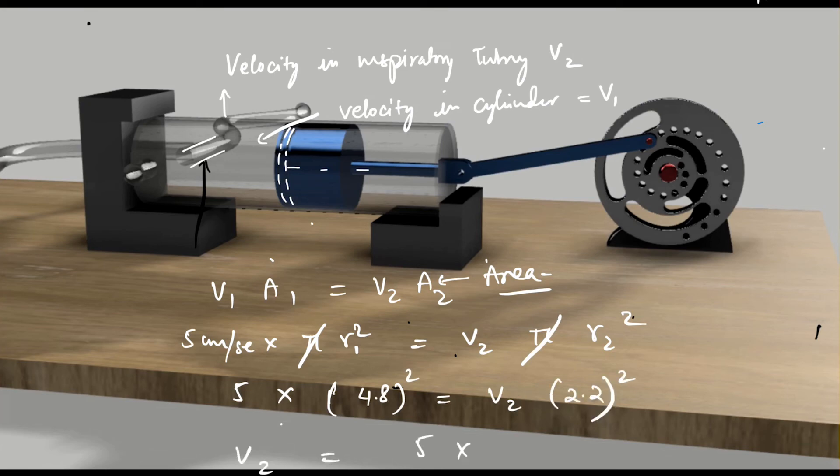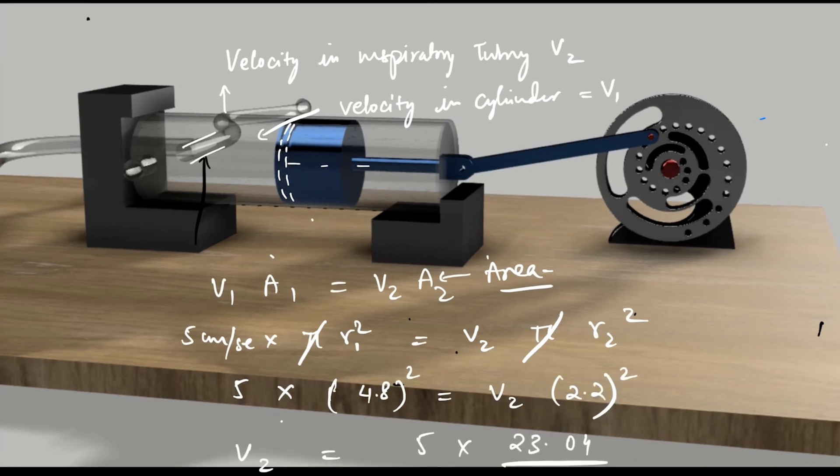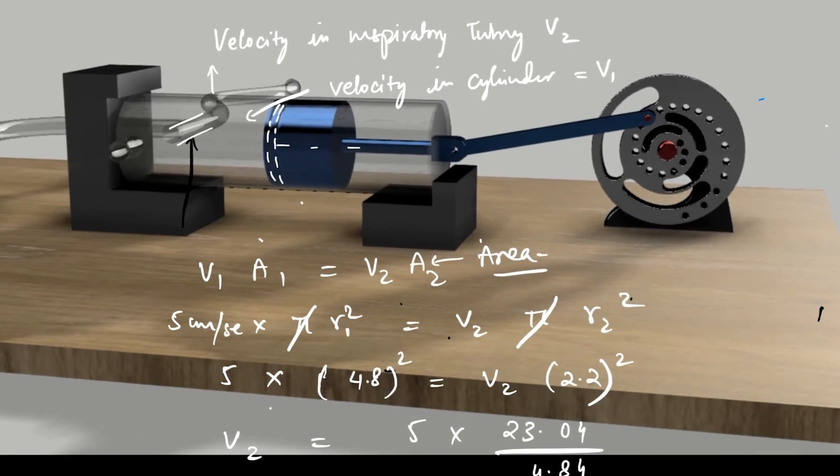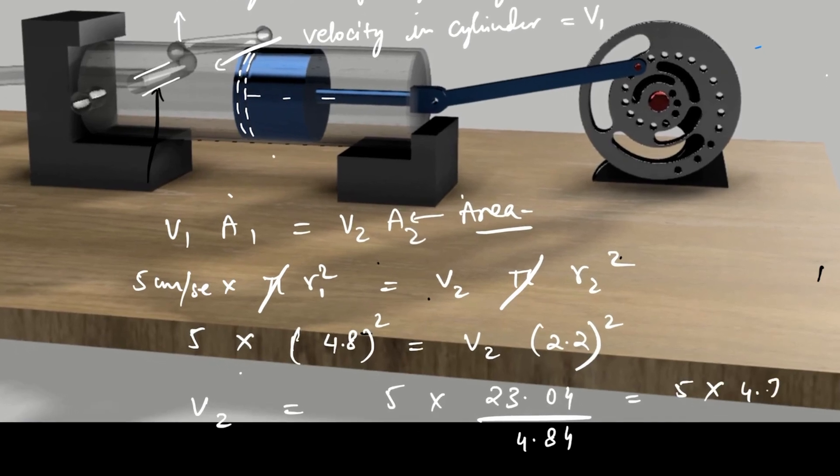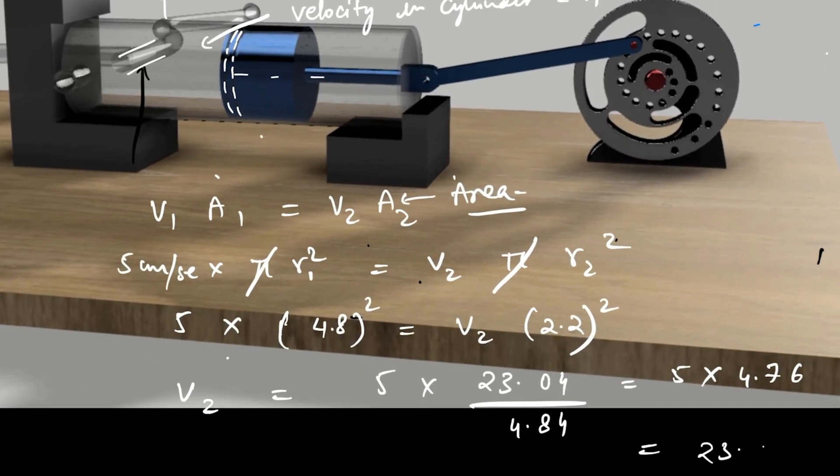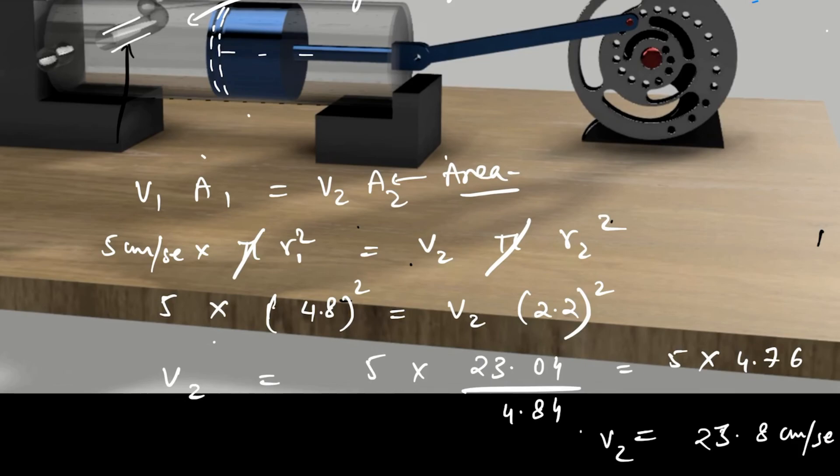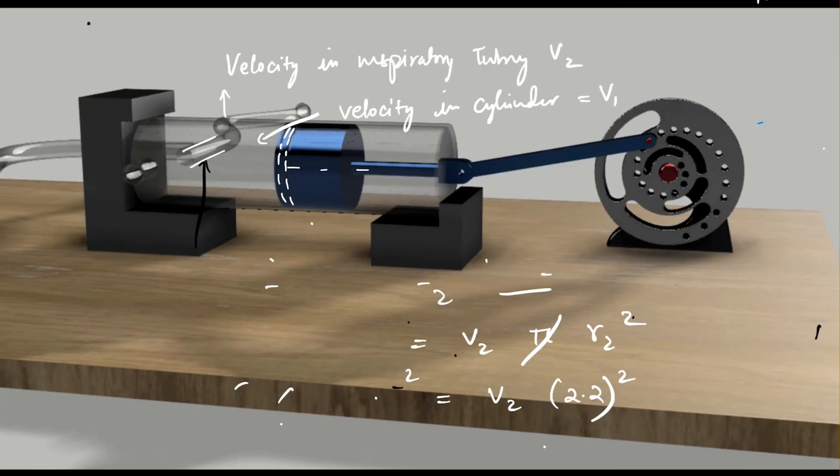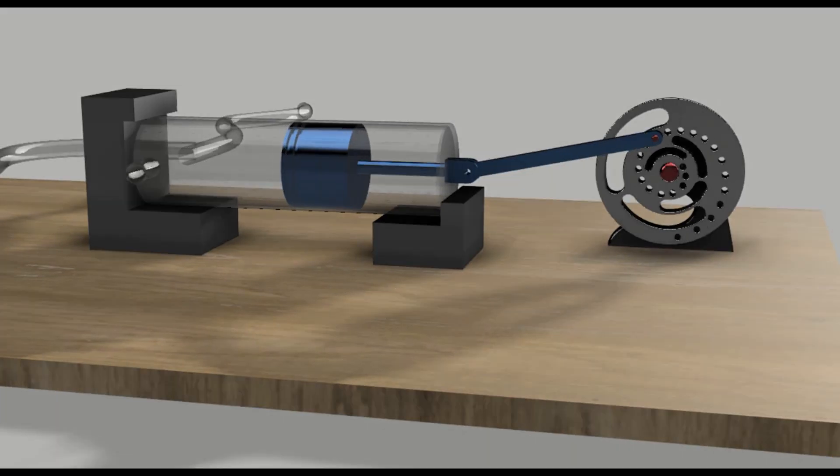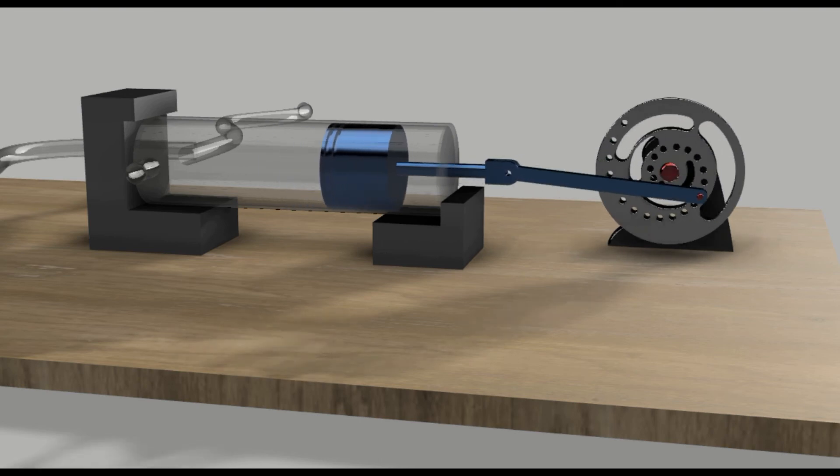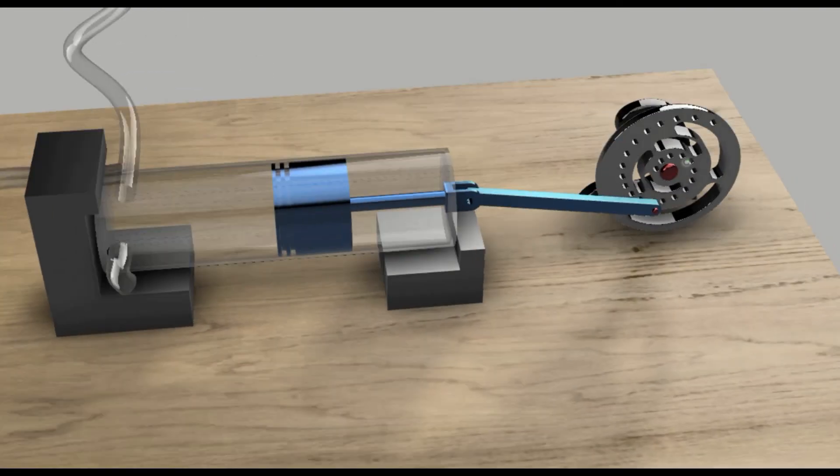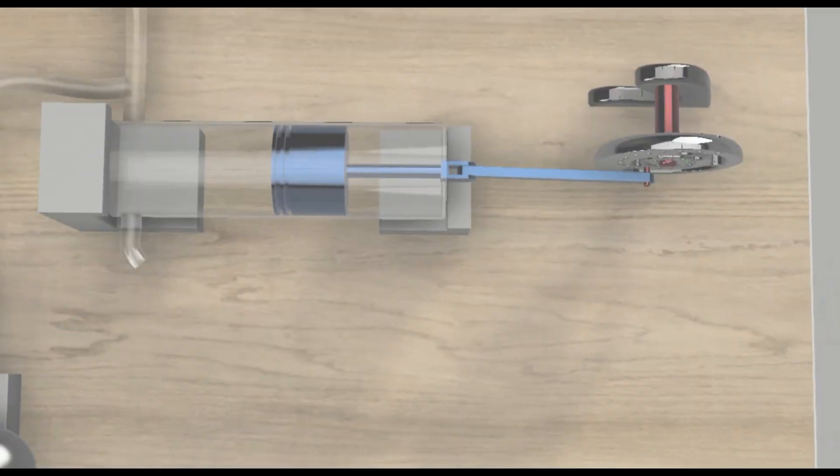We already know the maximum displacement could be 8 centimeters in our design, and the time taken will be 1.6 seconds for half of the cycle. So 8 upon 1.6 will be coming around 5 centimeters per second. The radius of the air cylinder is 4.8 centimeters and that of the inspiratory tubing is 2.2 centimeters. Thus the velocity inside the inspiratory tubing calculated by this formula is coming around approximately 23.8 centimeters per second.